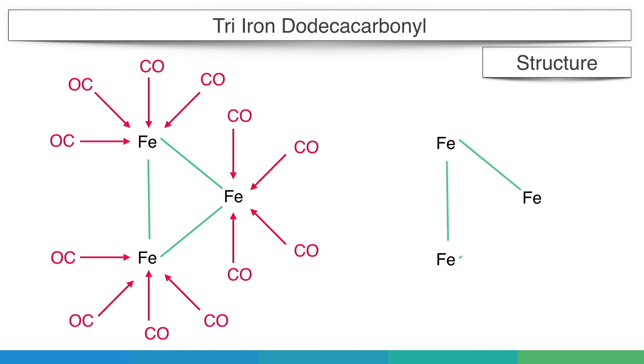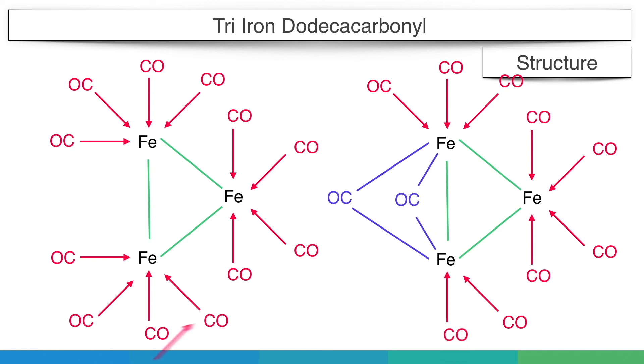Thus, the new structure was introduced as in the diagram, where two carbonyl groups are bridging between two iron atoms and the rest remains the same. But practical observation shows that the actual structure of tri-iron dodecacarbonyl is a mixture of both structures.